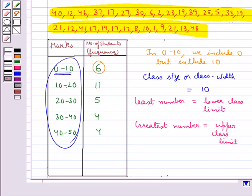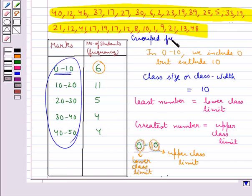For example, if you consider the class interval 0 to 10, 0 is the lower class limit and 10 is the upper class limit. Presenting data in this form, which simplifies and condenses data and enables us to observe certain information at a glance, is called a grouped frequency distribution table.